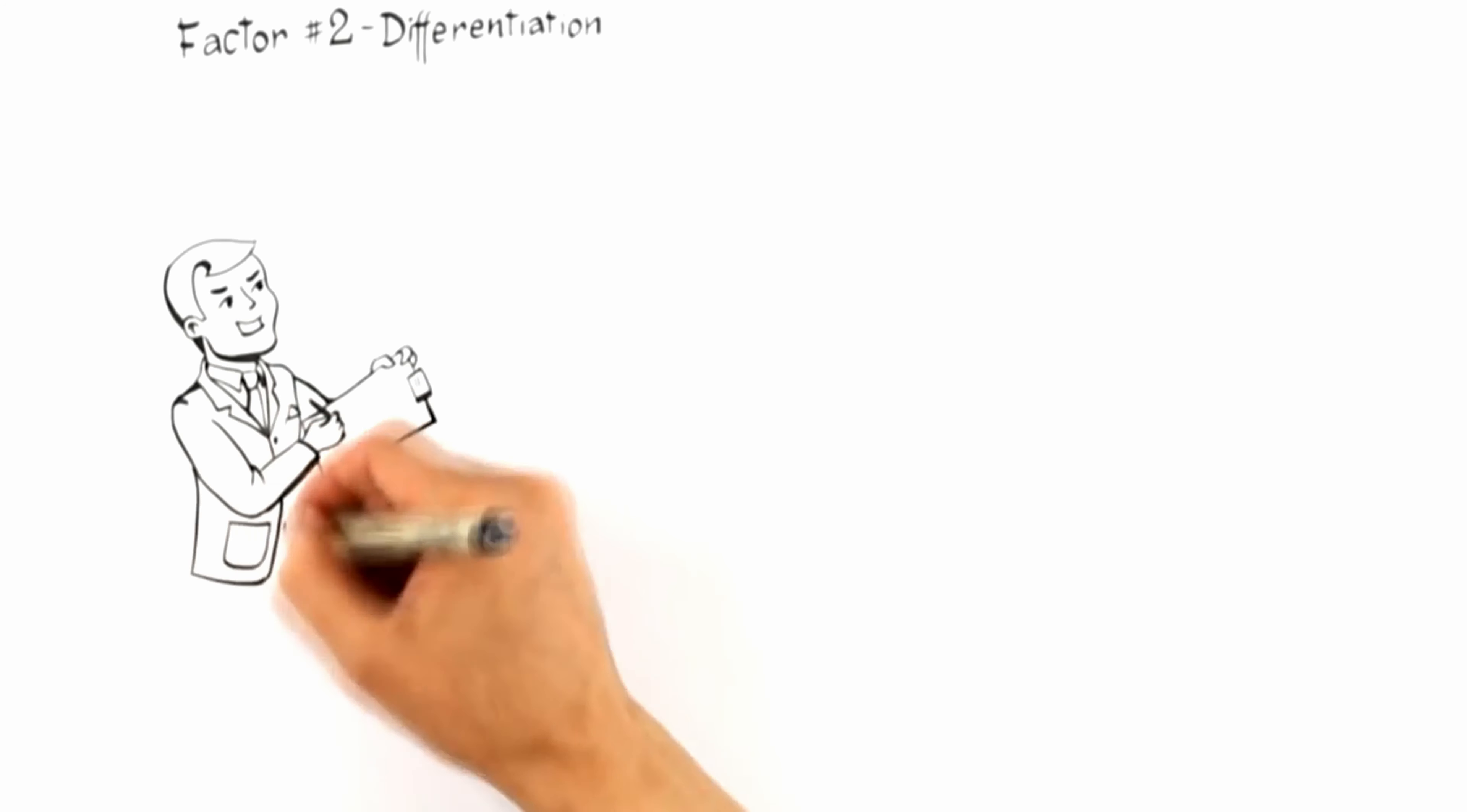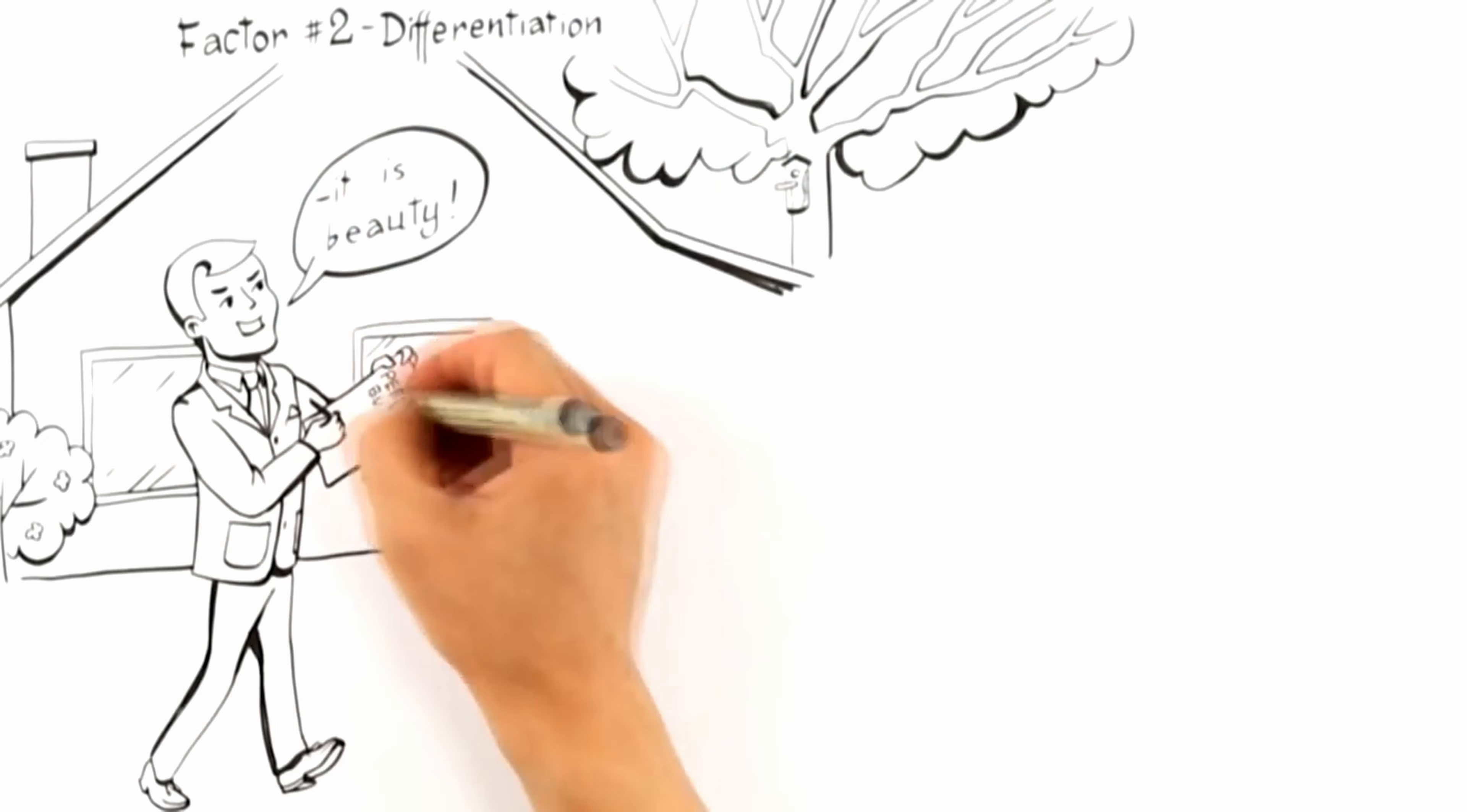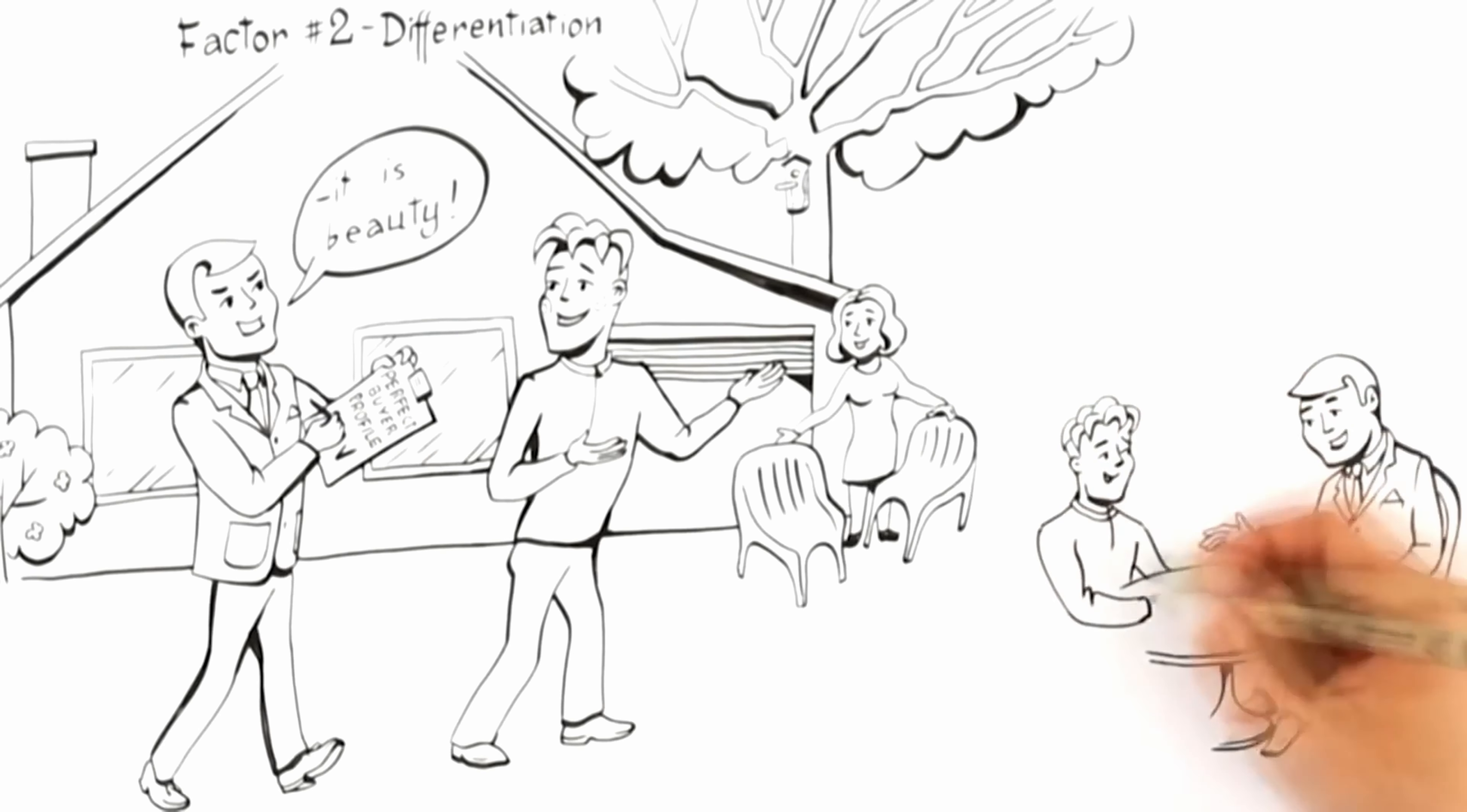Differentiation. To attract the highest possible offer, a home must be positioned to attract buyers who will perceive its highest value. Expert advertisers understand that there is a perfect buyer profile for the buyer that would be willing to pay the most money for your home. Expert advisors attract these perfect buyers by differentiating your home from other homes on the market by first anticipating a buyer's wants and needs.